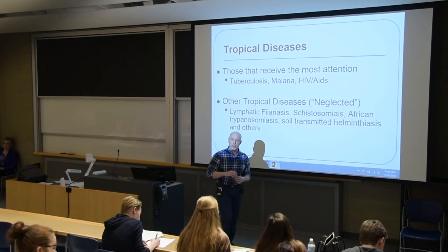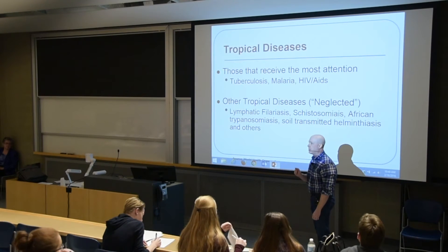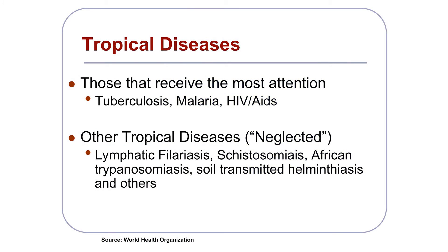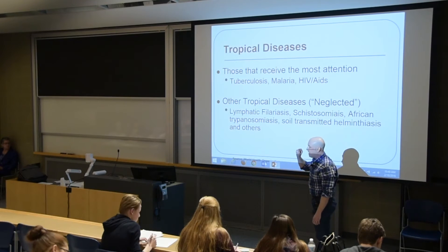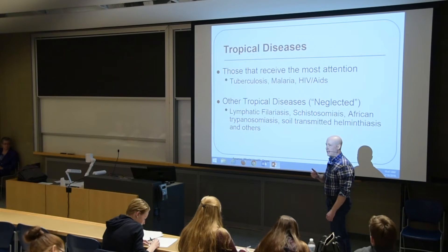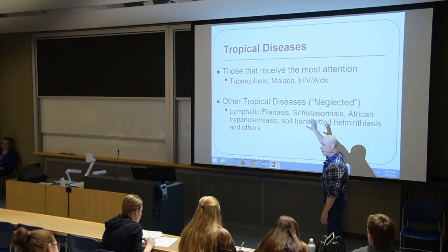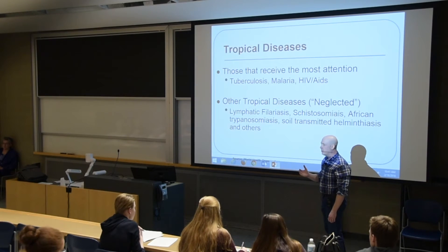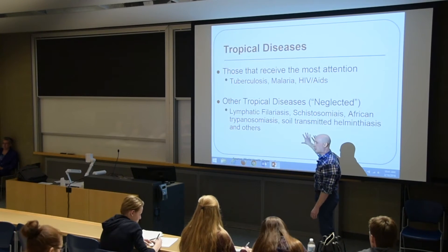Just to switch gears and talk about some of the more serious aspects of parasitology: parasitic diseases fall within a larger umbrella called tropical diseases, found mostly in developing countries and subtropical areas. The tropical diseases that receive the most attention are well-known ones like tuberculosis, malaria, and HIV/AIDS — referred to as the big three. However, most parasites fall under what the World Health Organization has named the neglected tropical diseases. They don't receive as much funding or attention, but they're still very serious, and there's an initiative by the WHO and other organizations to try to eradicate many of these neglected tropical diseases.